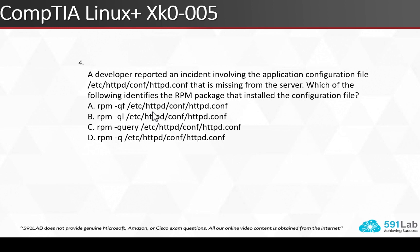Our fourth question: a developer reported an incident involving the application configuration file /etc/httpd/conf/httpd.conf that is missing from the server. Which of the following identifies the rpm package that installed that configuration file? The correct answer is A — we would specify the rpm command with hyphen small q (query) followed by small f, then the path to the file name.